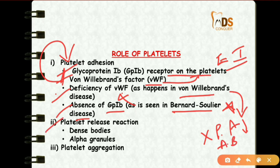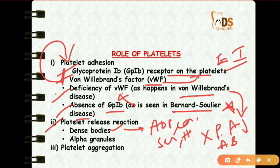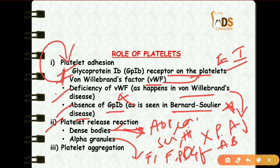The second step is platelet release action. Activated platelets undergo release reaction from two types of granules: dense bodies liberate ADP, calcium, serotonin, and histamine; alpha granules release fibrinogen, fibronectin, and platelet-derived growth factor. Platelet aggregation then follows the release of ADP. These three steps — adhesion, release action, and aggregation — result in the formation of a temporary hemostatic plug.